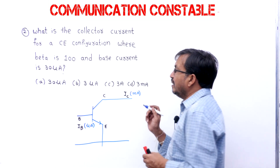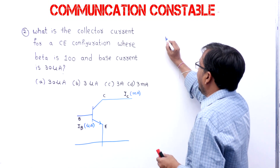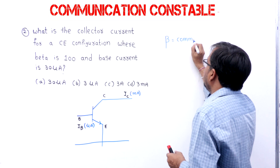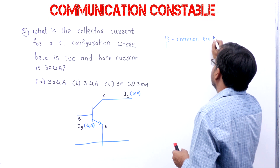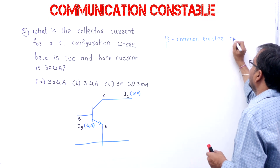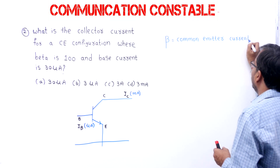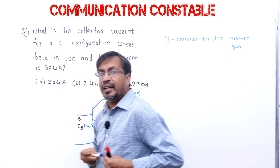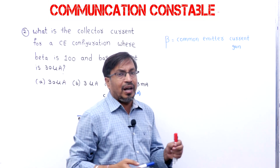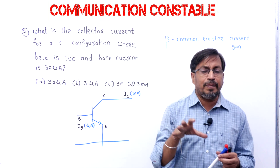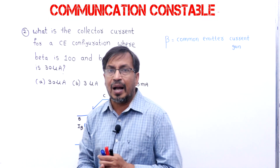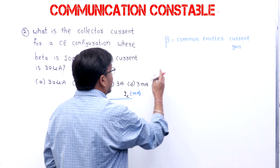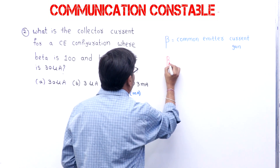Here beta is given. Beta is the common emitter current gain. What is alpha? Common base current gain. What is beta? Common emitter current gain. Similarly, gamma is the common collector current gain. In the three configurations — common base, common emitter, common collector — current gain means output current by input current. Beta formula is IC by IB.